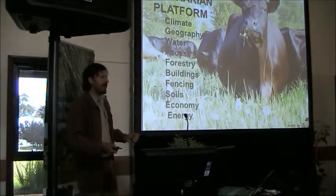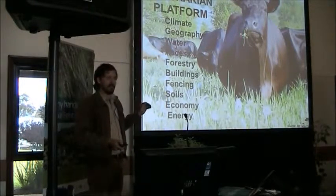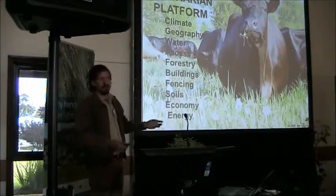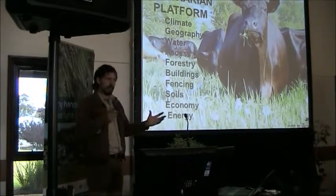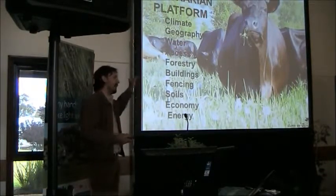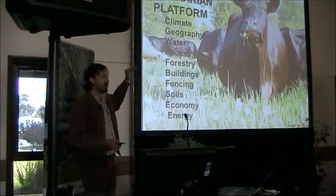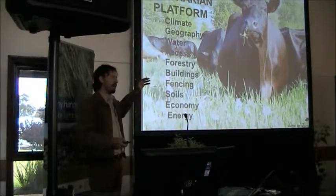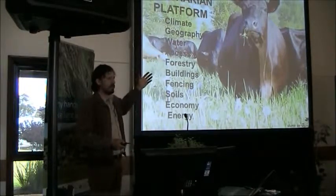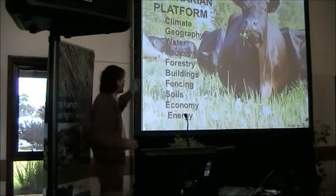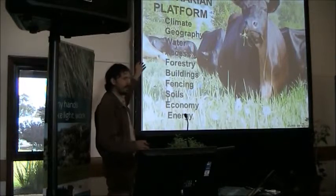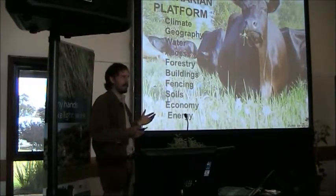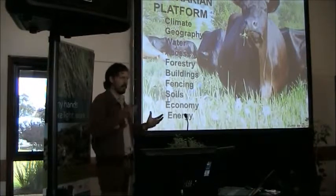It's based on PA Yeoman's keyline scale of permanence, which is a design template for when you're going into design for any human settlement. It works very well with agriculture — how do you go through point by point in terms of preference? What holds priority? The first thing you look at is the climate, which is the least manipulable aspect within the human sphere.